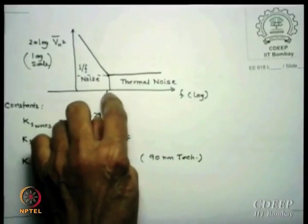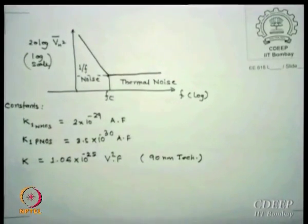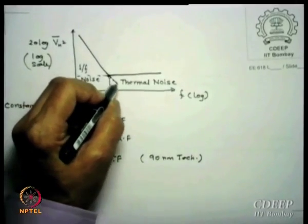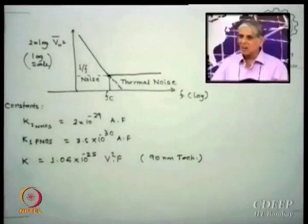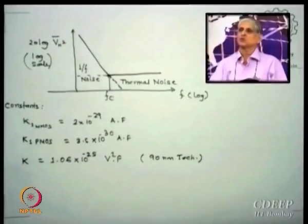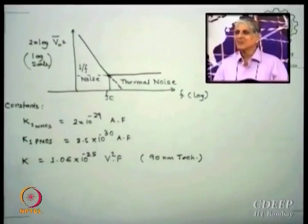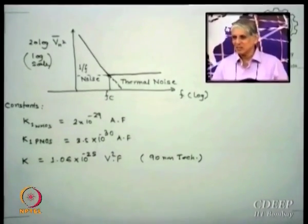Above the corner frequency where 1 upon f noise has the same value as thermal noise, the 1 upon f noise continues to decrease and thermal noise dominates. This frequency f_c is very relevant. At what frequency we are operating decides whether to use one of them. Somewhere here both are equivalent terms, so normally you may put both terms all the time.